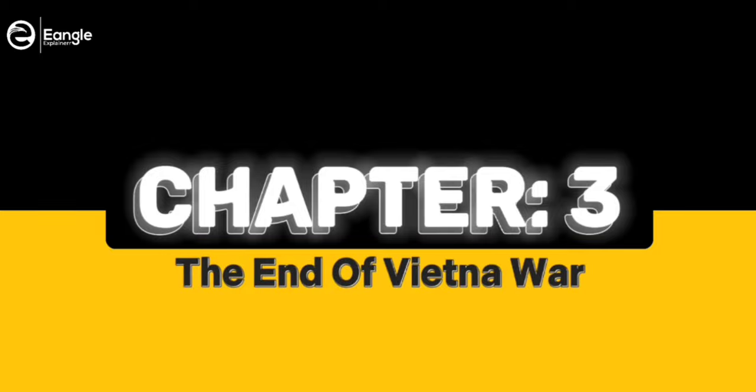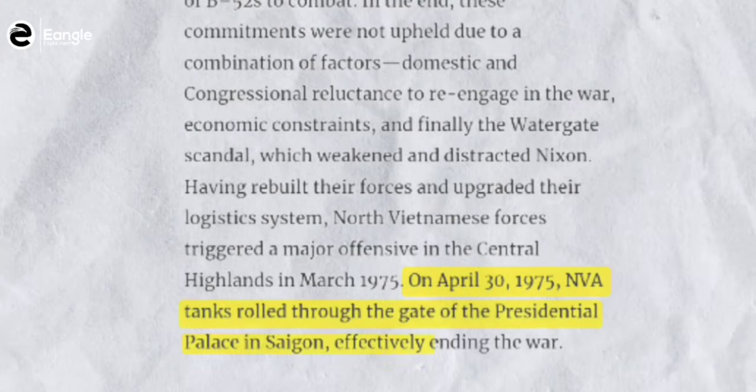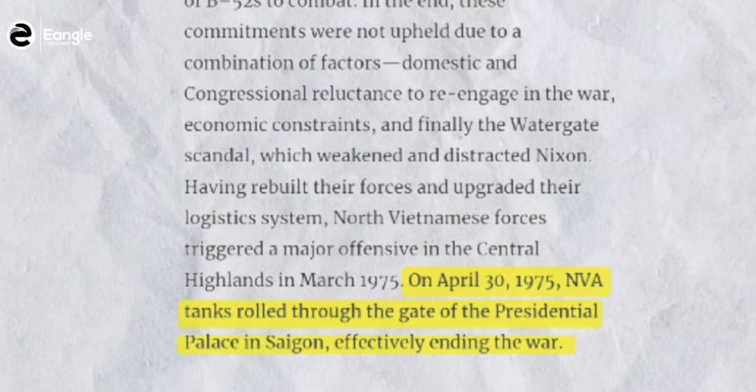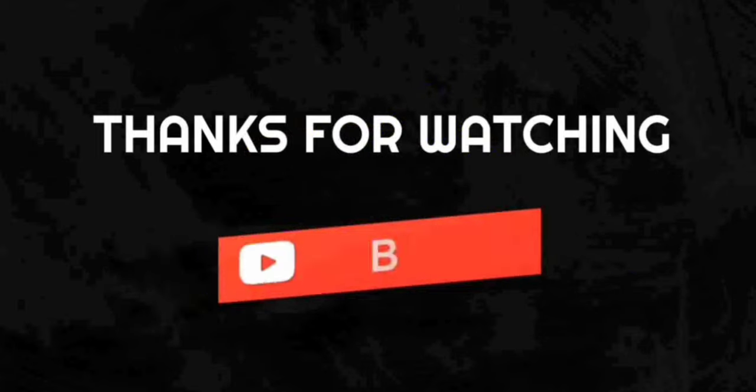The Vietnam War finally came to an end in 1975, when North Vietnamese forces seized control of Saigon, the capital of South Vietnam. The war had taken a tremendous toll on both sides, resulting in hundreds of thousands of casualties and leaving a lasting legacy of trauma and bitterness. The Vietnam War was deeply rooted in the legacy of colonialism, Cold War tensions, and ideological divisions. While the conflict officially ended decades ago, its impact still resonates today, both in Vietnam and around the world. Thank you for joining us as we explore the fascinating and complex history of the Vietnam War.